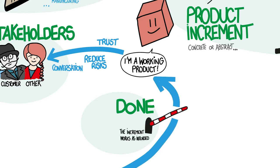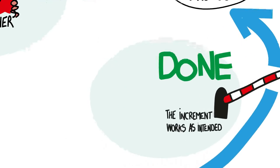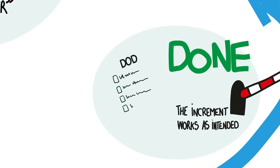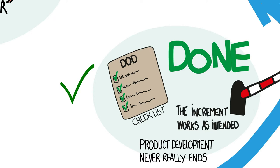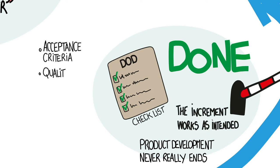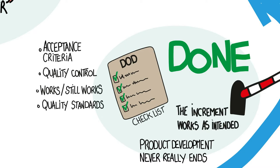Done is a quality gate. Nothing enters the product increment unless it is done. Every scrum team has a definition of done, and it is applied to every feature and every increment. The definition of done does not address whether the product is complete or finished — as long as a product is viable, its development usually never really ends. The definition of done is often a simple checklist that covers both acceptance criteria and quality control, ensuring that features from previous sprints still work and that the team maintains its quality standards.